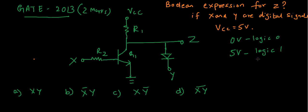So we need to find out the logical expression for Z, that is the Boolean expression for Z. It is pretty simple if you know the characteristics of transistor and diode.